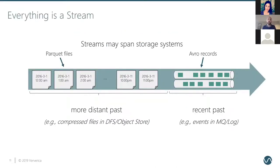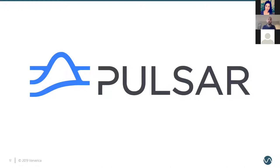One issue in practice when considering all data as a stream is how it's going to be stored. In many architectures, only the most recent data is available in log format, while historic data is stored on a data lake or DFS. You need to think about how to migrate data, how your business logic bridges the gap, and how to avoid dropping data or duplicating records. That's why we love technologies like Pulsar that provide a unified storage layer for historic and real-time data and allow us to view our data as a stream.